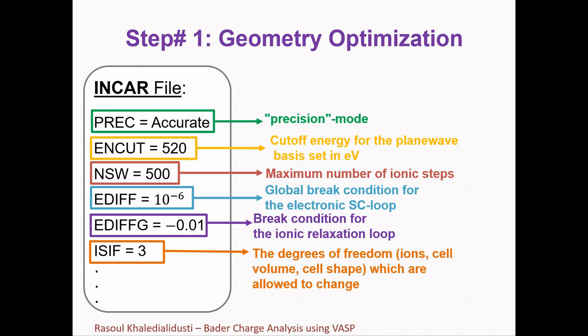We need dense enough K-Point grids in the K-Points file, and the atomic positions of our structure should be determined in the POSCAR file. For the INCAR file, there are many tags that we can use depending on the structure. For example, if the structure has magnetization, we need to set the corresponding tags associated with the magnetization. Here I will explain just some important and general items that are always required to be considered for geometry optimization.